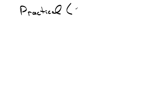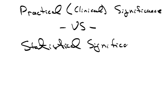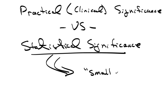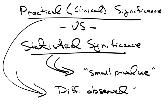The very last thing I want to talk about here is the idea of practical significance, very commonly referred to as clinical significance, versus statistical significance. Statistical significance simply means that you have a small p-value, smaller than alpha, so you can reject. Practical significance, on the other hand, means the difference observed is meaningful.